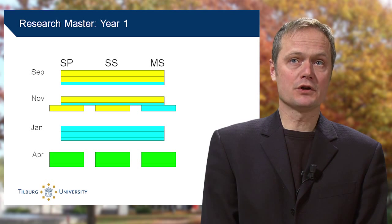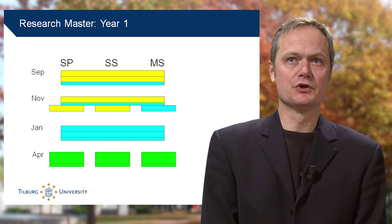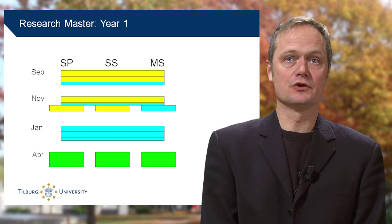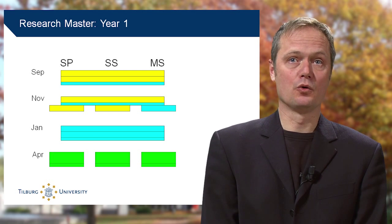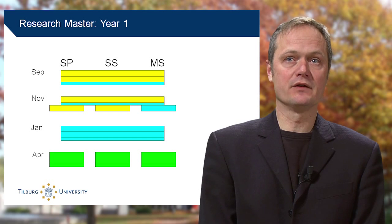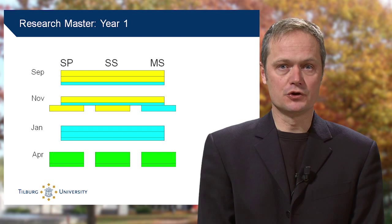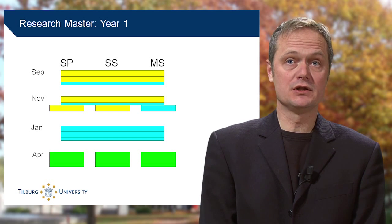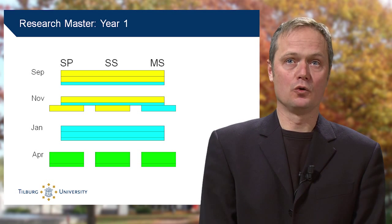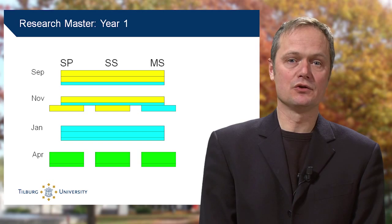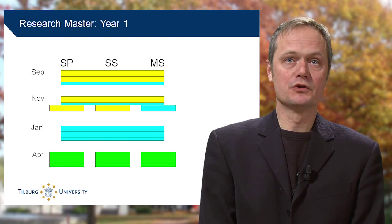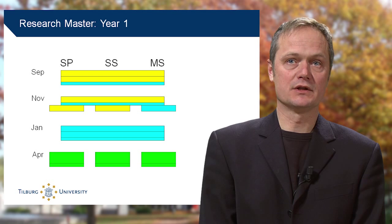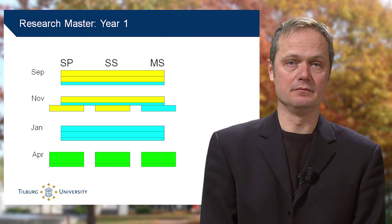The first two blocks are a general introduction to the study of individual behavior in social context. The three common yellow courses discuss the perspectives from a psychological, a sociological, and an organization science perspective. The blue common courses cover statistics every researcher should know. The second block also includes a minor-specific course, to let you get acquainted with the area you want to specialize in.